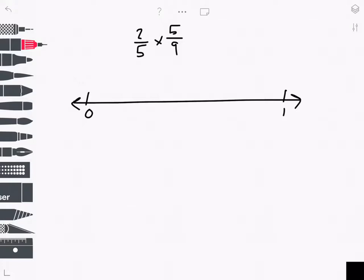I'm looking for 2/5 of 5/9, so I'll start by segmenting this number line into ninths. I'll do that by making thirds and splitting each third into thirds.